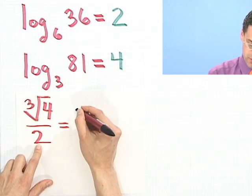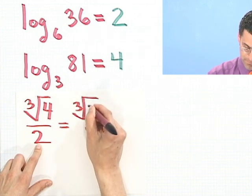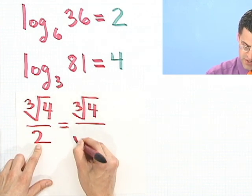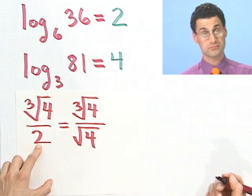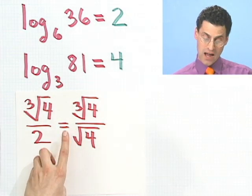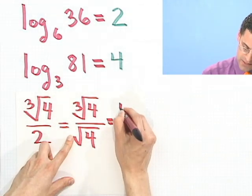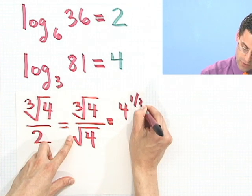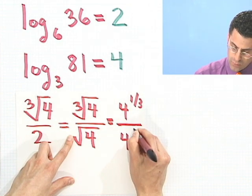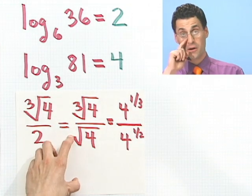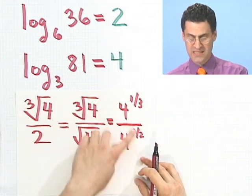Well, 2 I could write as 4 by doing the following. That's just the square root of 4. Square root of 4 is 2. Ah, but now I could write this as 4 to the 1 third power divided by 4 to the 1 half power, changing all the roots to exponents.